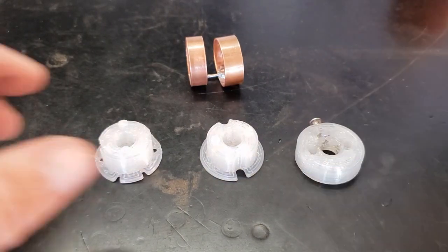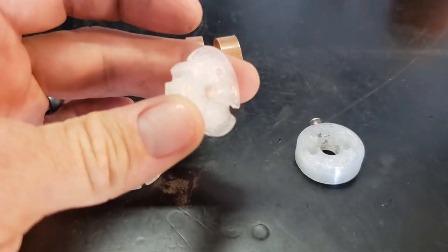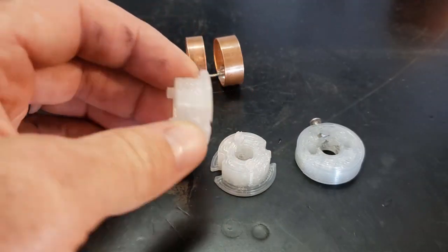To assemble the commutator, cut two copper rings from a 3/4 inch plumbing tube and solder a short piece of wire connecting the two rings.